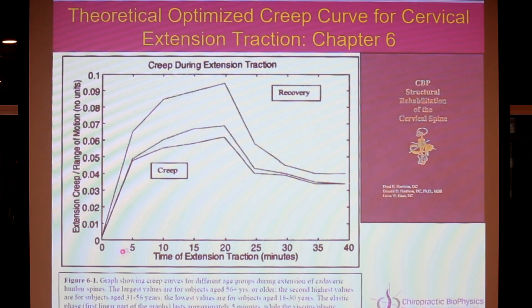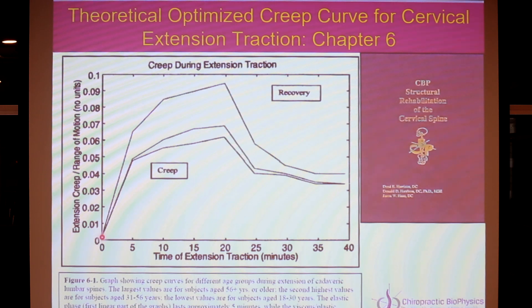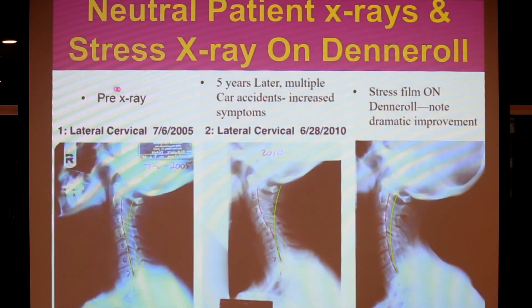This is a graph from my cervical rehab book, chapter six. This shows the time on traction on the dental roll — or any extension traction device in the office — and then the extension creep deformation versus the range of motion. What's happening is: as I hold the tissue in an extended position for five minutes — very important.